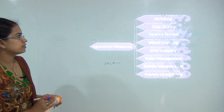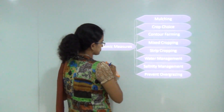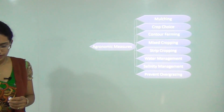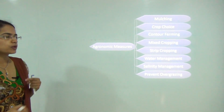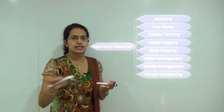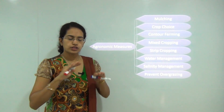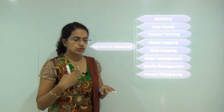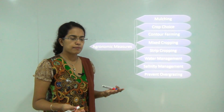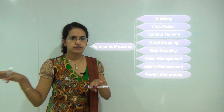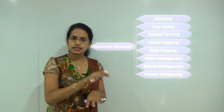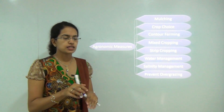The next category is agronomic methods, which are important methods to understand. The first is mulching. Mulching means creating an extra layer of soil on top of the existing soil. So if there is any cause that would lead to soil erosion, the extra top layer would go off while the original soil retains its fertility.